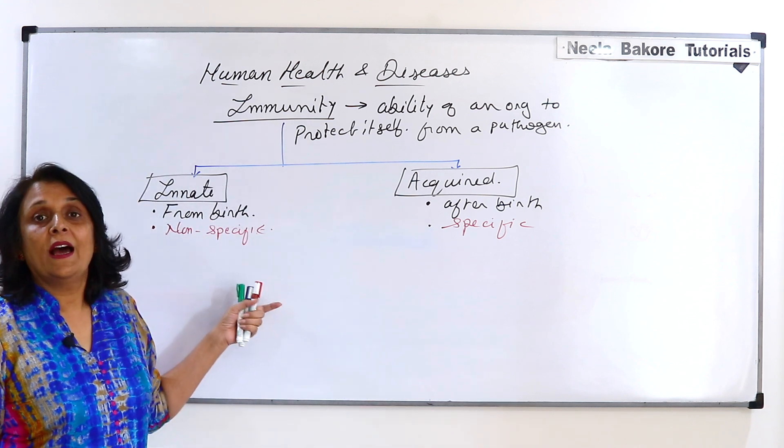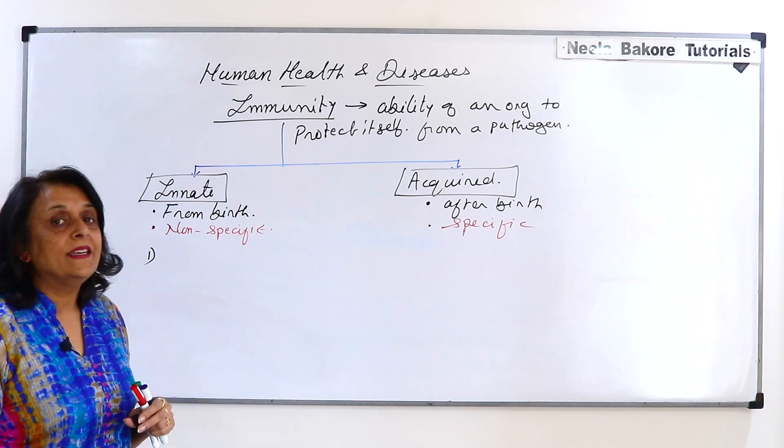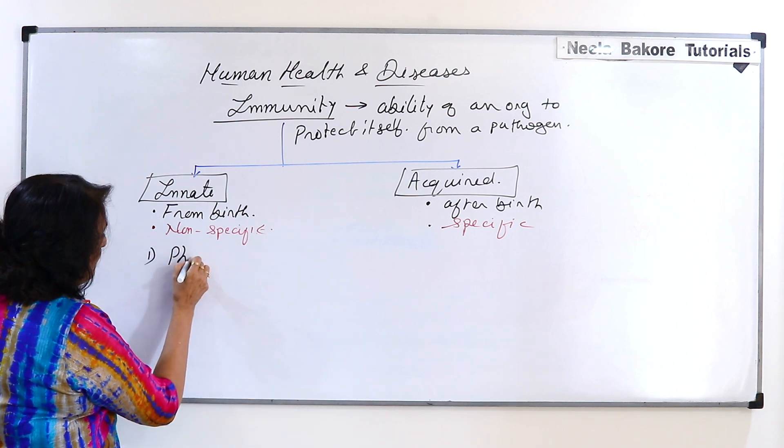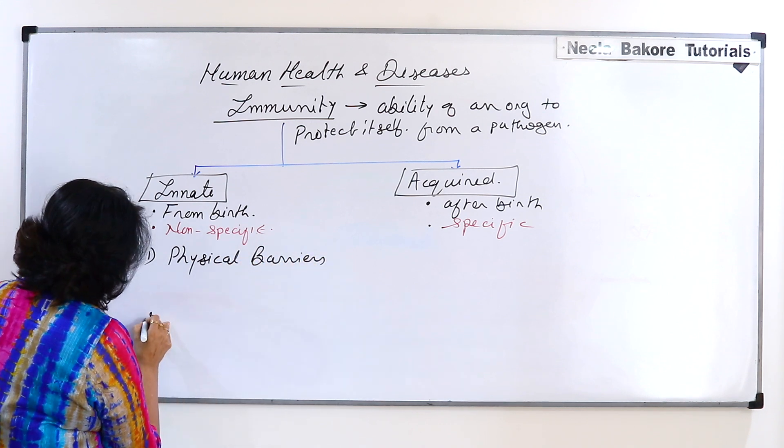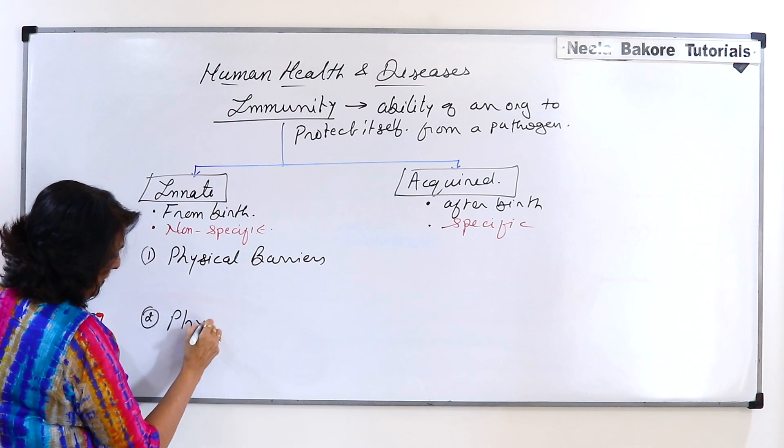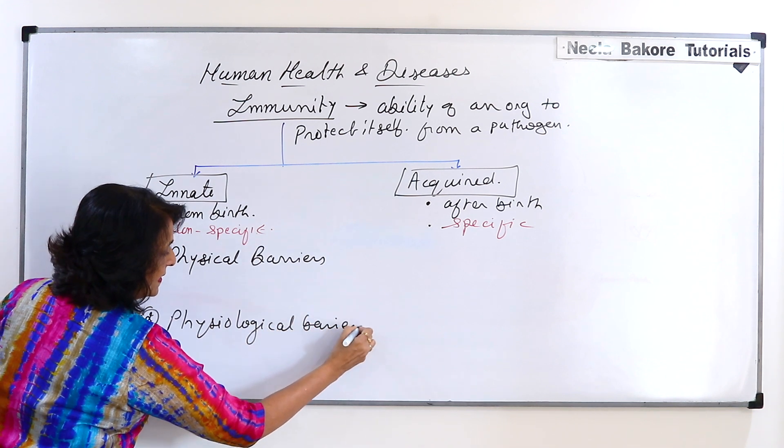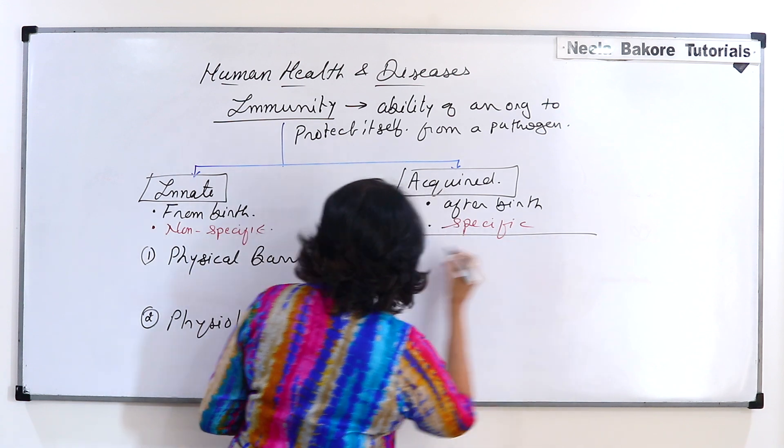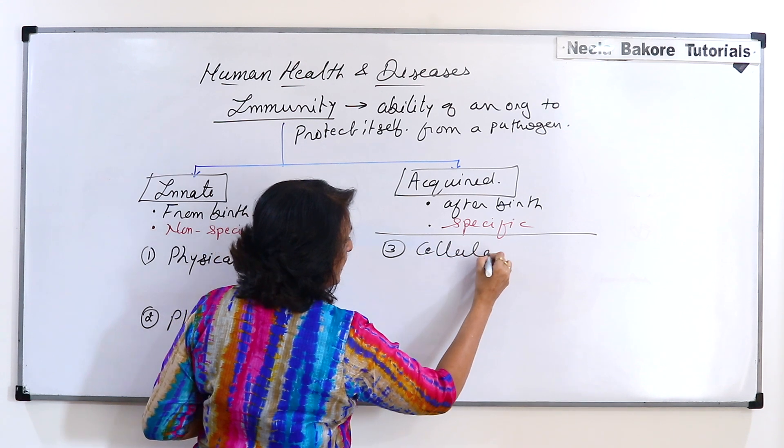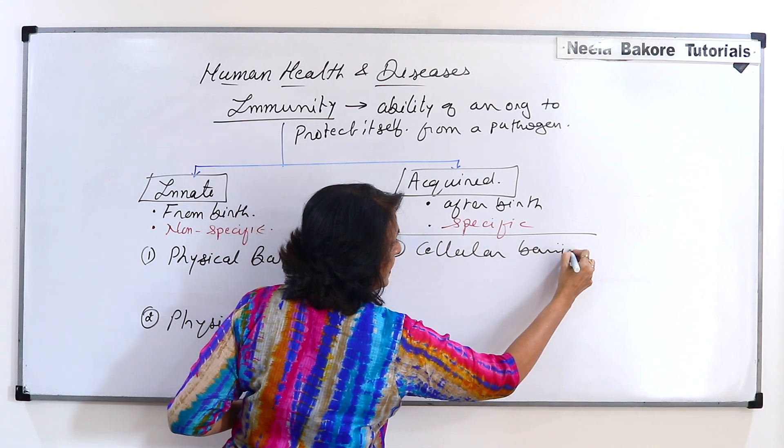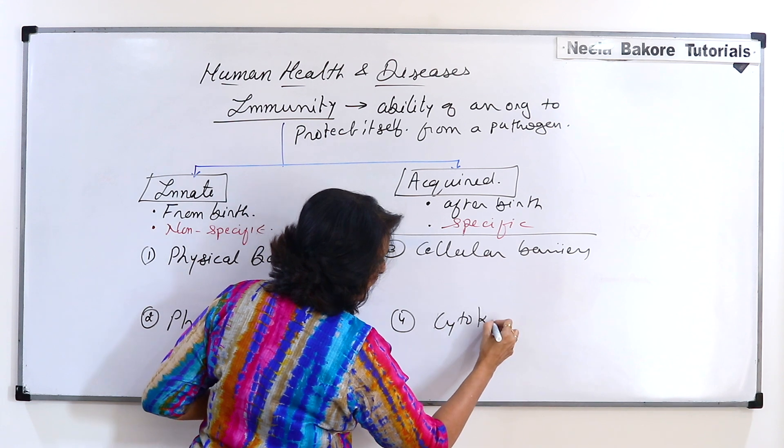Let us first see what are these types of innate immunity. So here basically these are all barriers which we have. First is physical barriers, the second are physiological barriers, third the cellular barriers, and the fourth are called cytokine barriers.